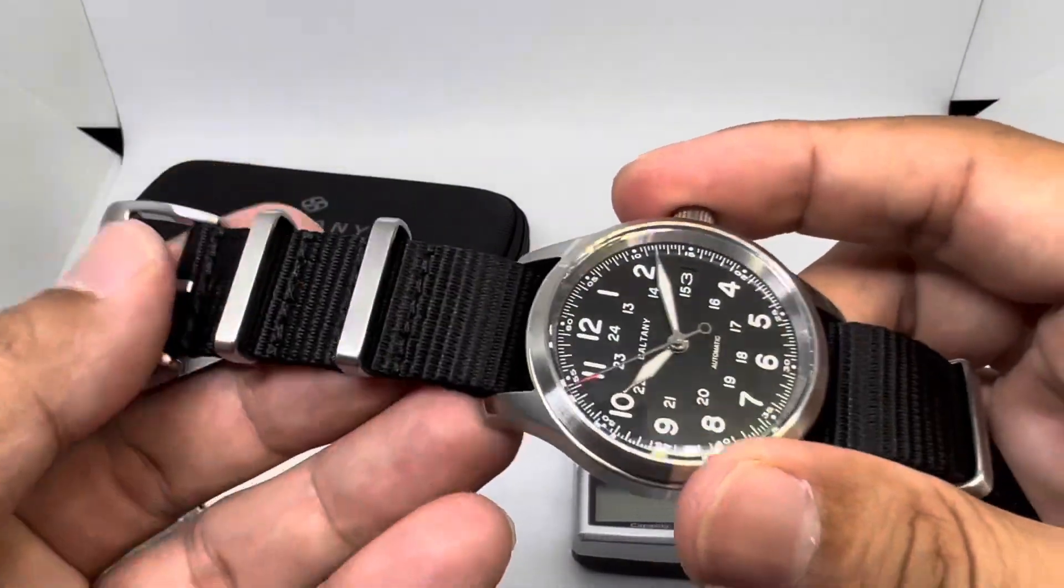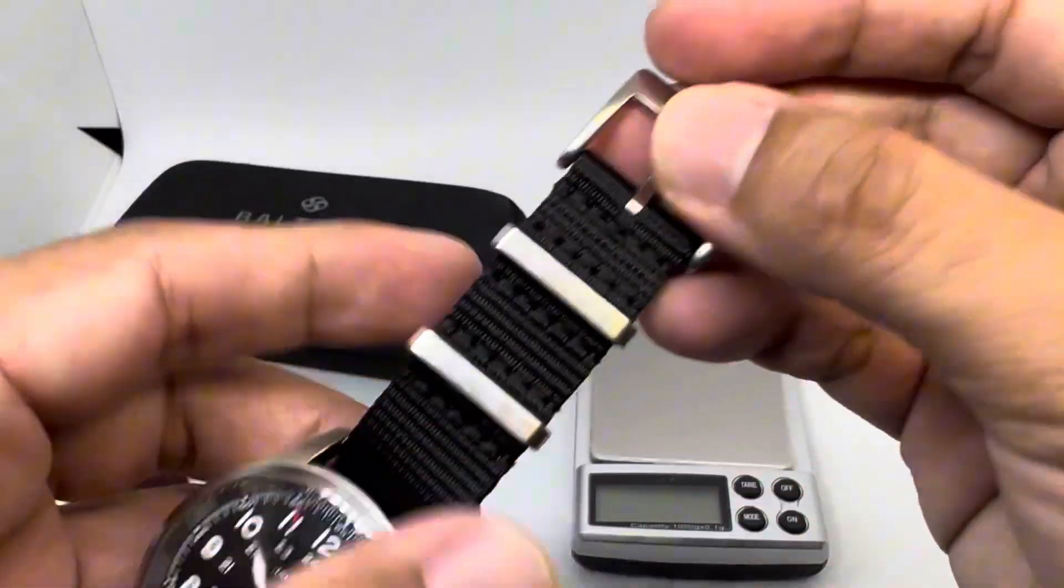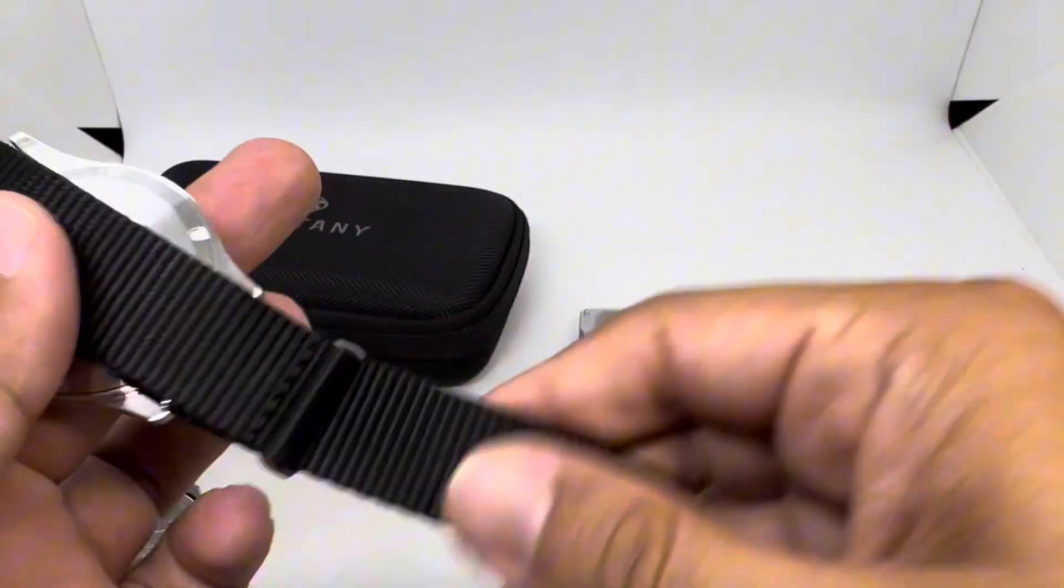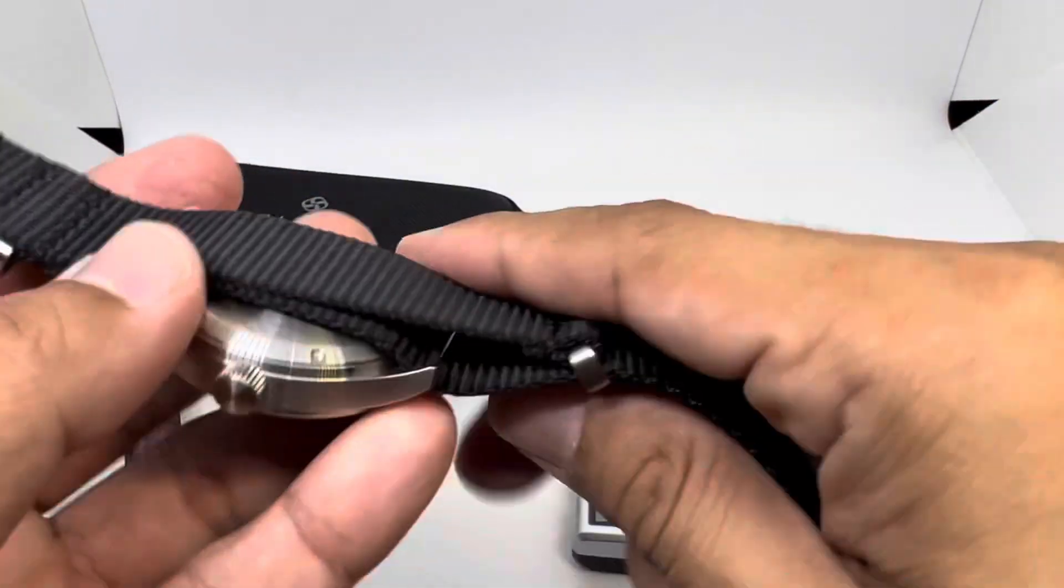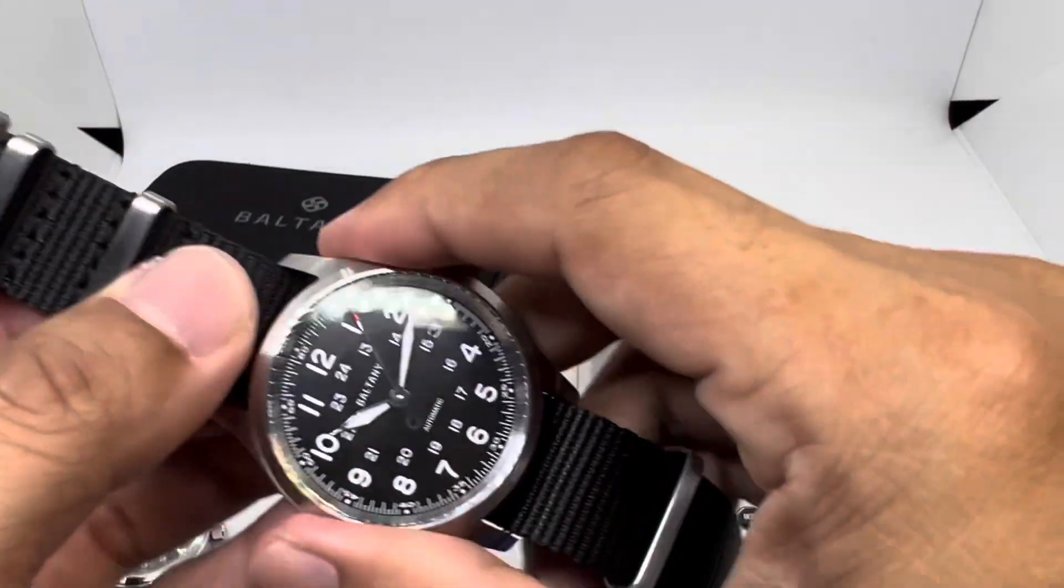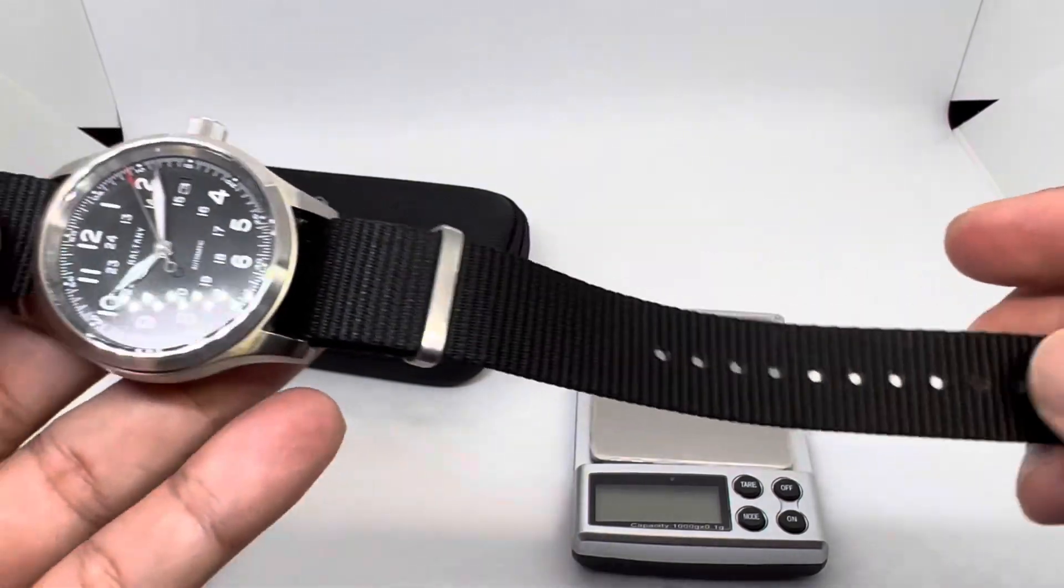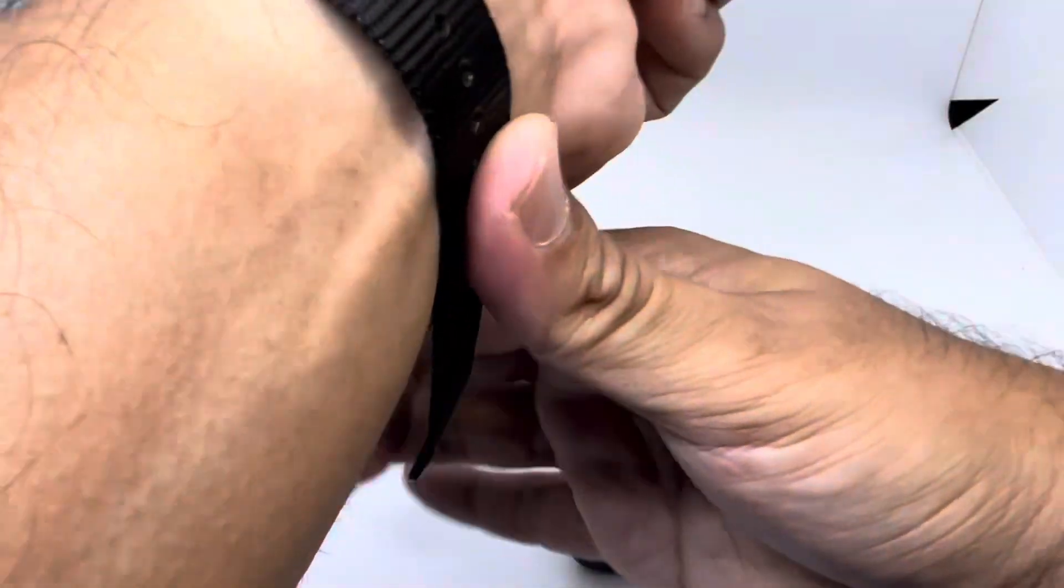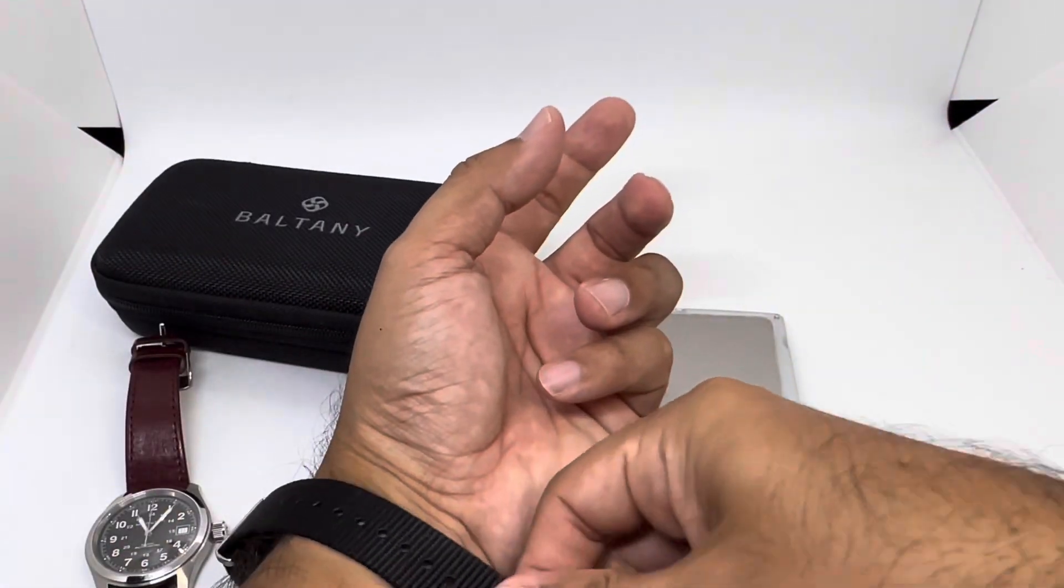On this version I've gone for this super duper soft nylon NATO strap, which is very nice. Previously I thought this was going to be a bit too rough, but surprise surprise, this is very high quality strap from Baltany. Maybe they should have introduced more colors to the strap. Let's put it on the wrist and see how it looks.